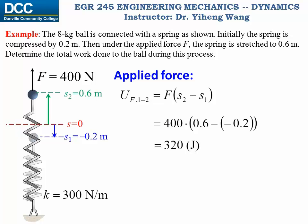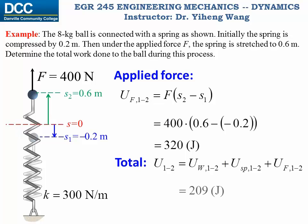During this process, the total work done to the ball by all three external forces is the sum of these contributions: negative 62.8 plus negative 48 plus positive 320 equals 209 joules, which is positive work.